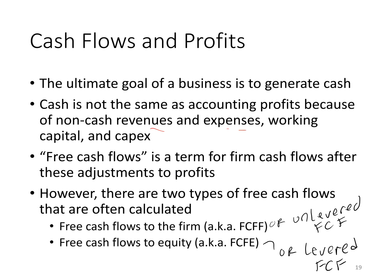There are two types of free cash flows. They're called free cash flows to the firm, FCFF, also called unlevered free cash flows, and free cash flows to equity, FCFE, another name for that is levered free cash flows. Levered means with debt, unlevered means without debt. So an unlevered cash flow would be the cash flow if the firm had no debt, and levered accounts for the fact that the firm has debt.